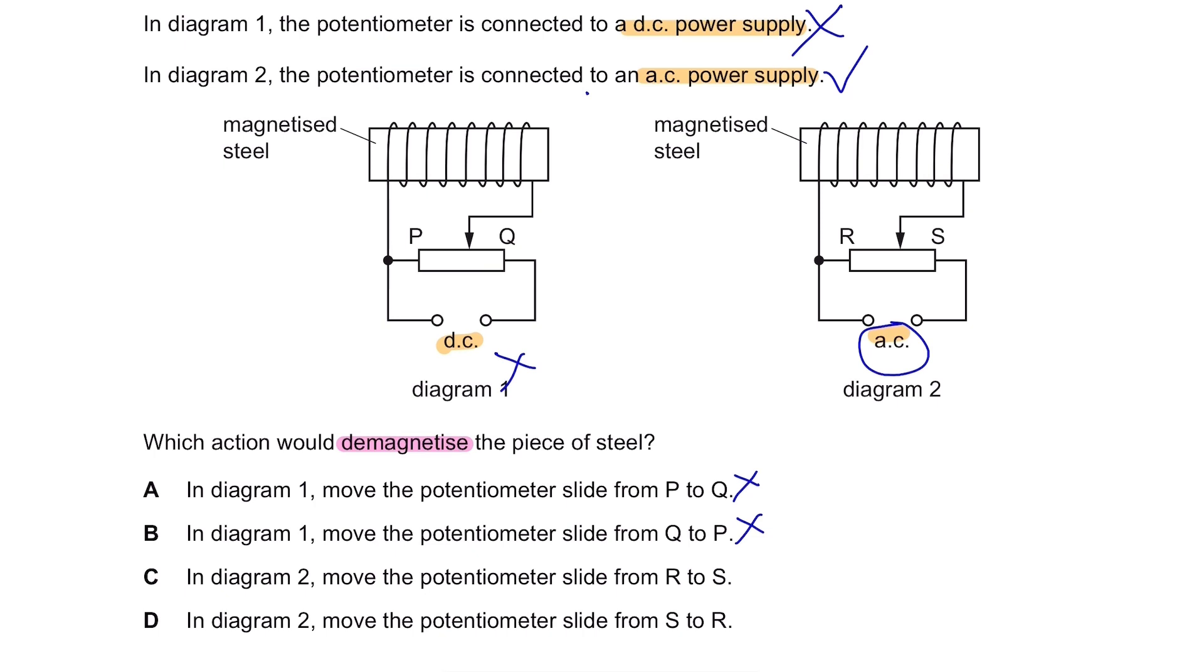Then what we do is, we need to decrease the current while the AC current is running. So, to decrease the current, since this is the potential meter here, you have to move this guy over here. So that when the current flows, it will flow from like this until here. It will have the least current. So our answer will be that in diagram 2, you move the potential meter slide from S to R so that you can decrease the current while the AC current is running.